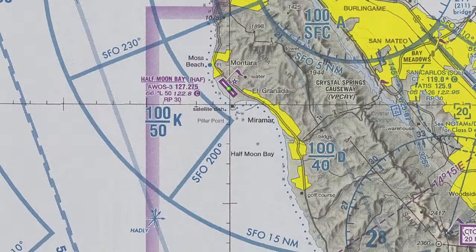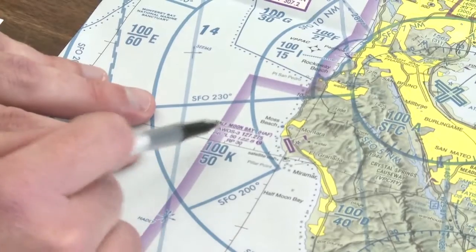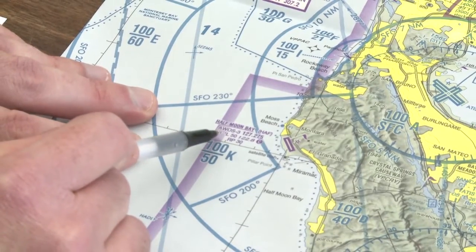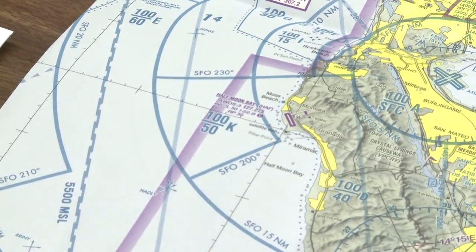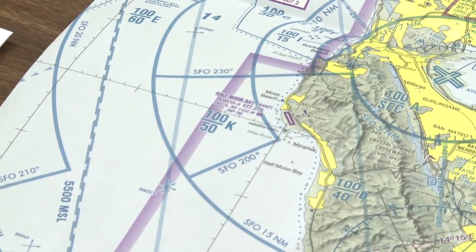Moving along, our identifier is HAF. That 66 is the field elevation — 66 feet above sea level.